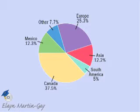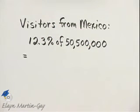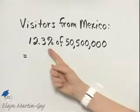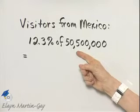So let's use this graph to find how many people visited the U.S. in 2008 from Mexico. Notice the region or sector for Mexico is 12.3 percent. So to solve that problem we need to find 12.3 percent of the total visitors in 2008.